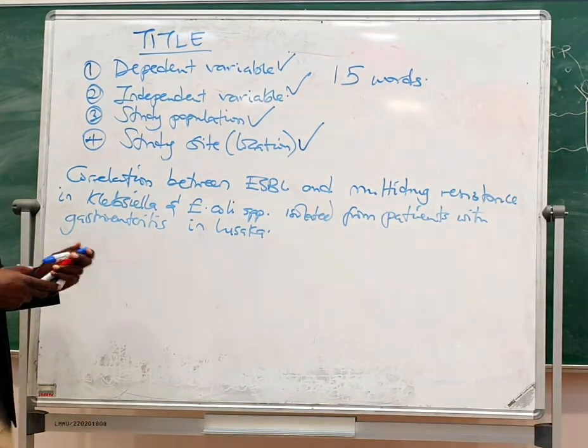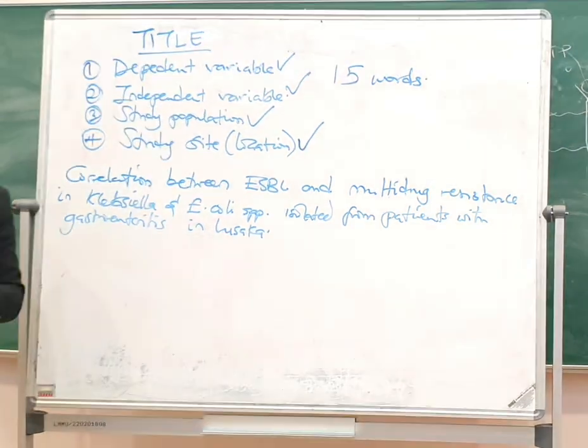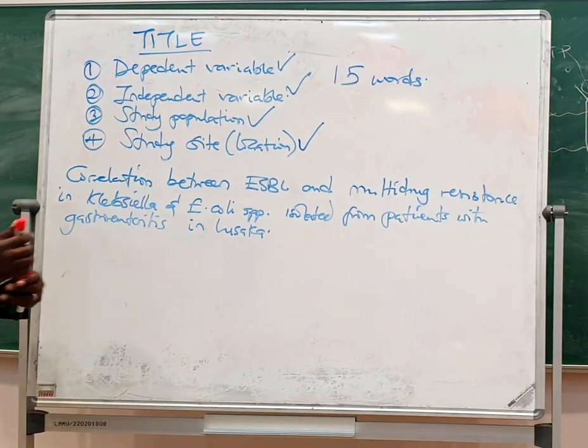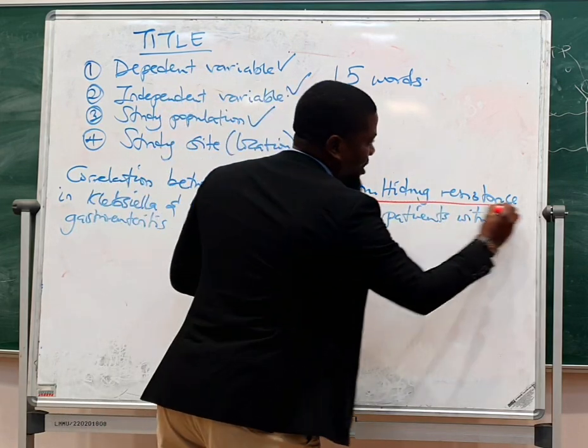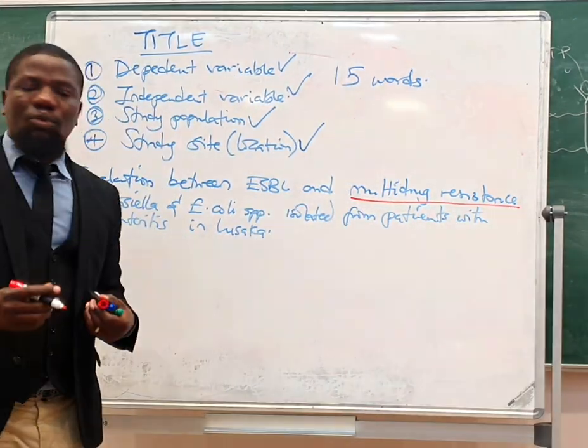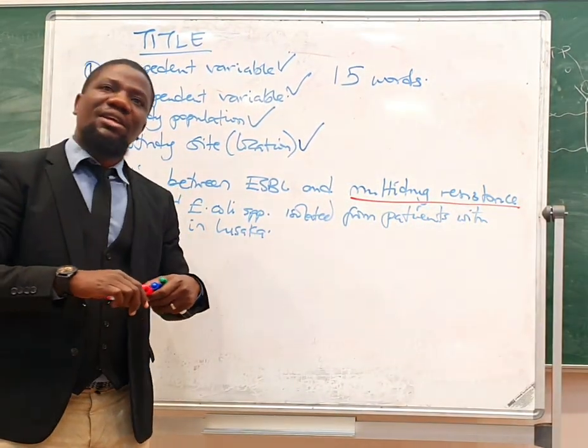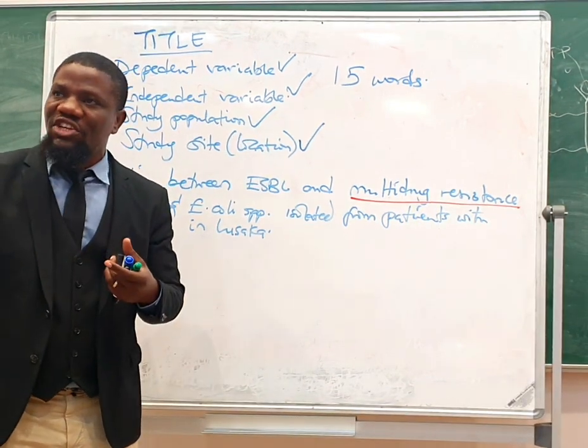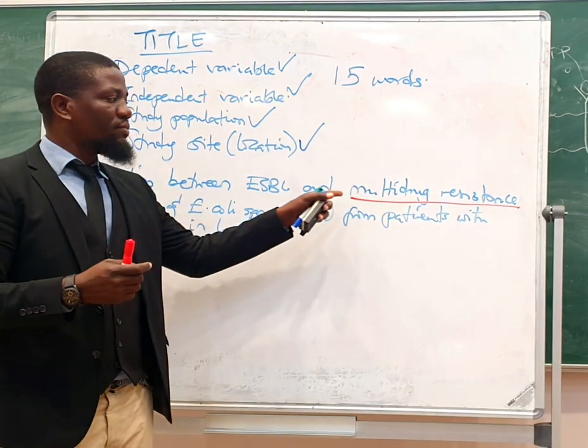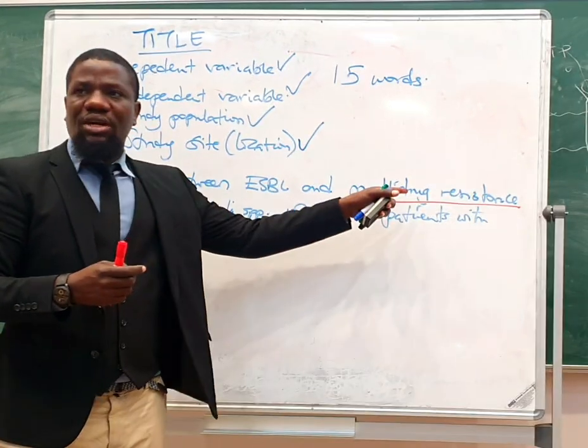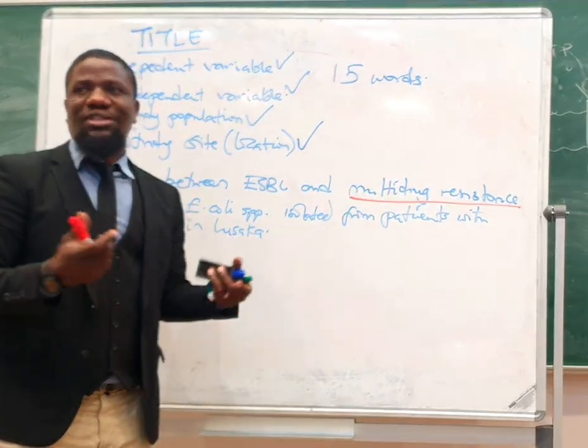We will have actually brought out the things that we are really interested in which is the dependent variable, multi-drug resistance which you could choose to measure. The measuring of the variables is important. You choose to measure it as multi-drug resistant or not resistant, so that becomes your dichotomous variable.